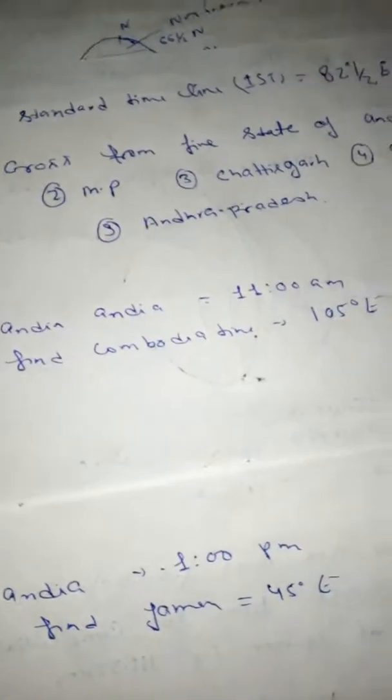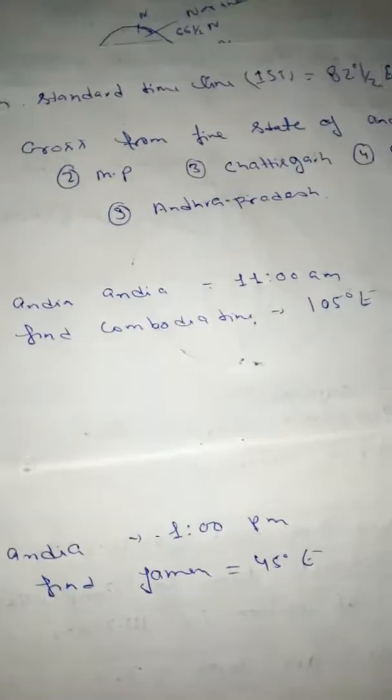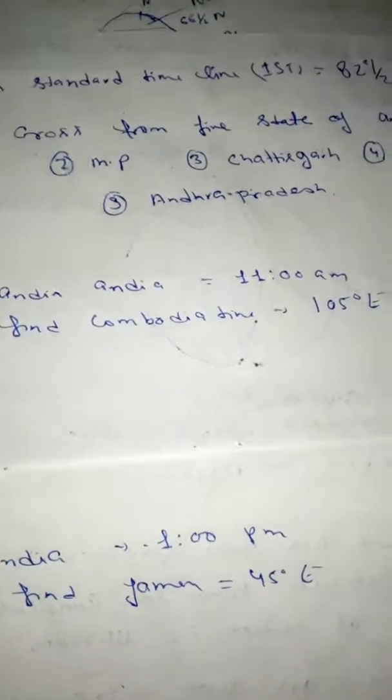Now the question arises, if in India there is 11 AM and in Cambodia which is 105 degrees east, so what was the time?